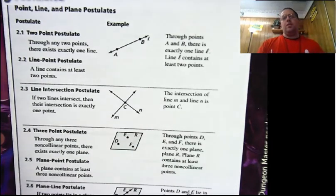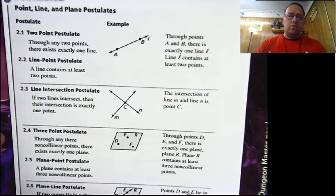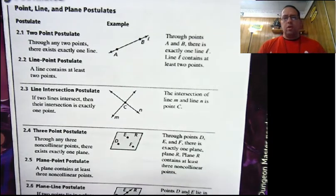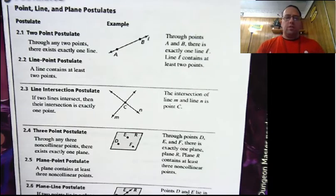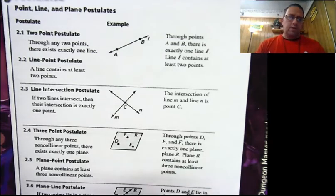What a postulate is — if you remember, we've talked about this before — this is a rule that we are going to accept as true and as valid without having actual proof. It's kind of like those undefined terms: point, line, and plane, where we can't really define them, but we're just going to go with it. Postulates are things that work every single time. They have never failed us, but we can't really prove it with a good logical proof. So we're just going to go with it.